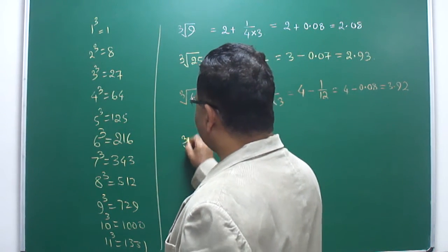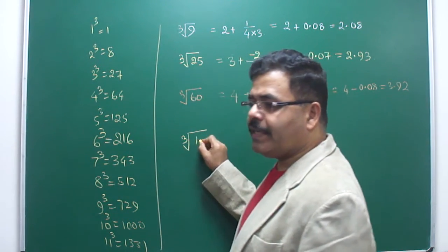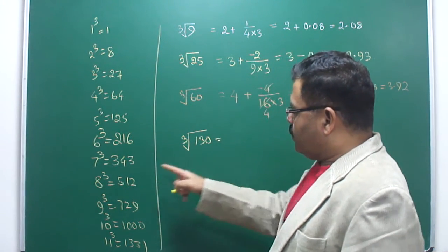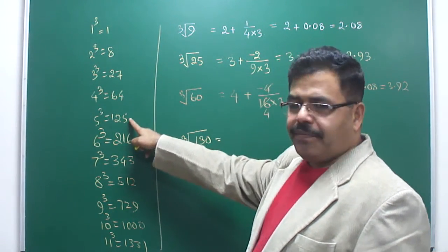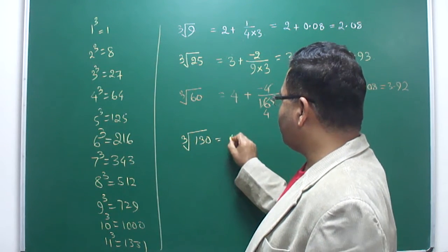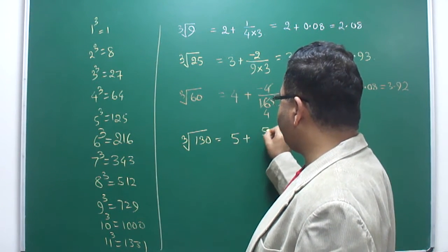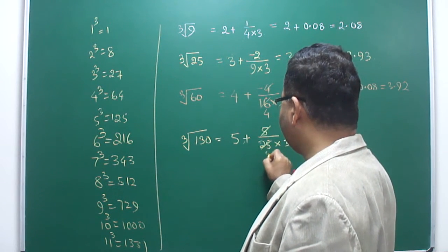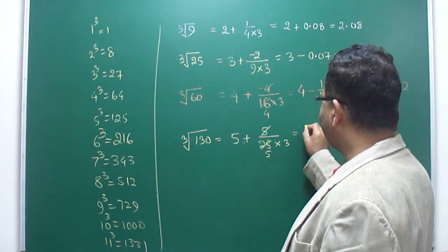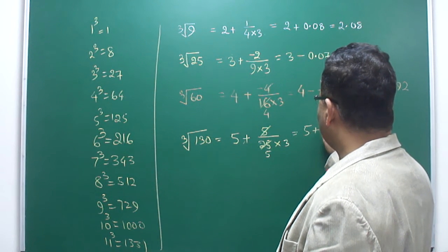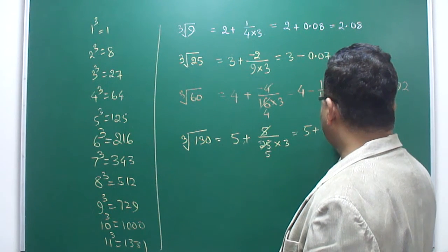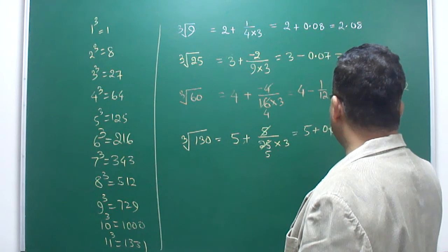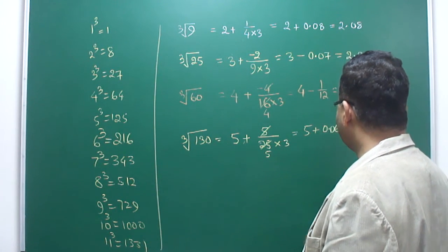In a similar situation, we can deal with cube roots of all numbers. Let us consider a three digit number, say 130. It is more than 125, so the answer would be more than 5: 5 plus 5/75. Again, this is 5 plus 0.06, and the answer is 5.06.